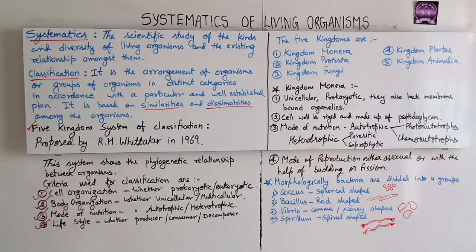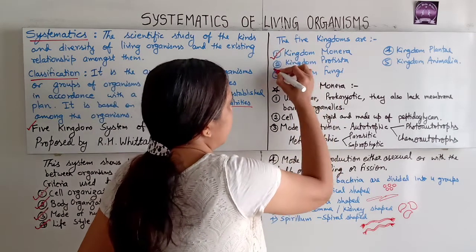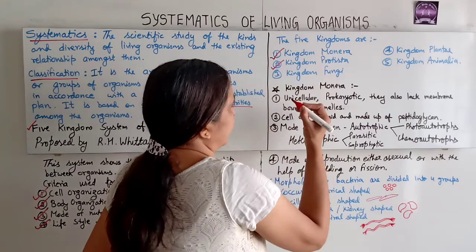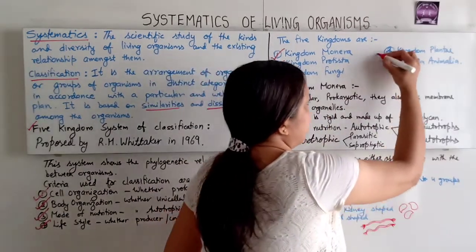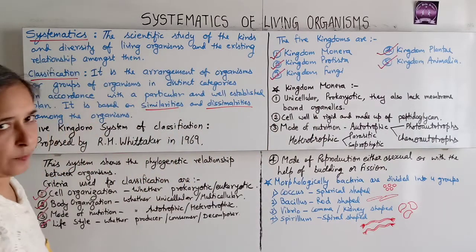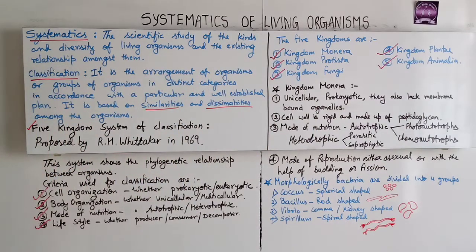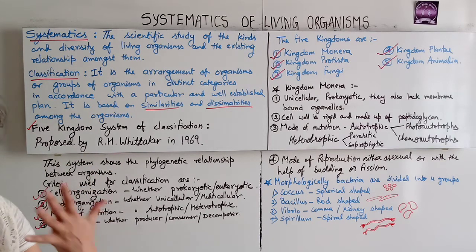Whittaker gave five kingdoms: Kingdom Monera, Kingdom Protista, Kingdom Fungi, Kingdom Plantae, and Kingdom Animalia. We will study each one by one, and I have given the general characteristics and examples point-wise so you can easily remember them.